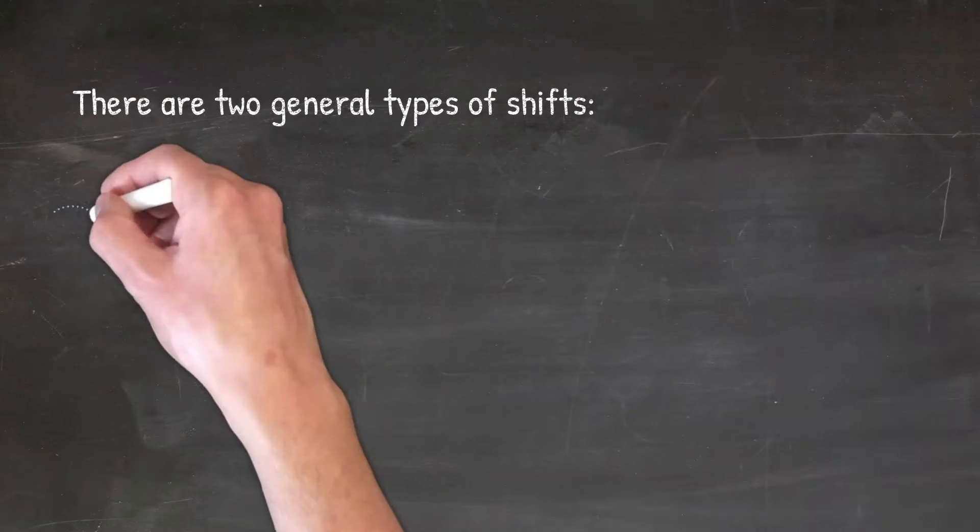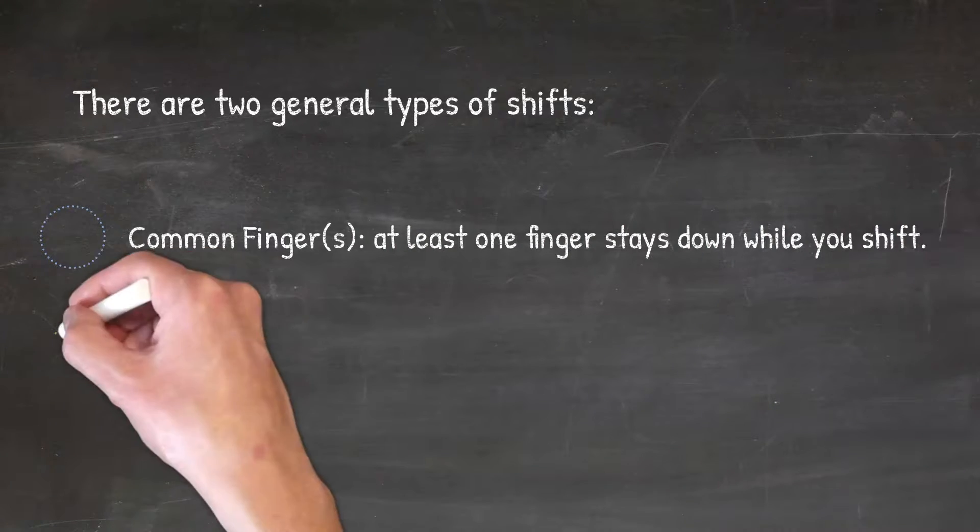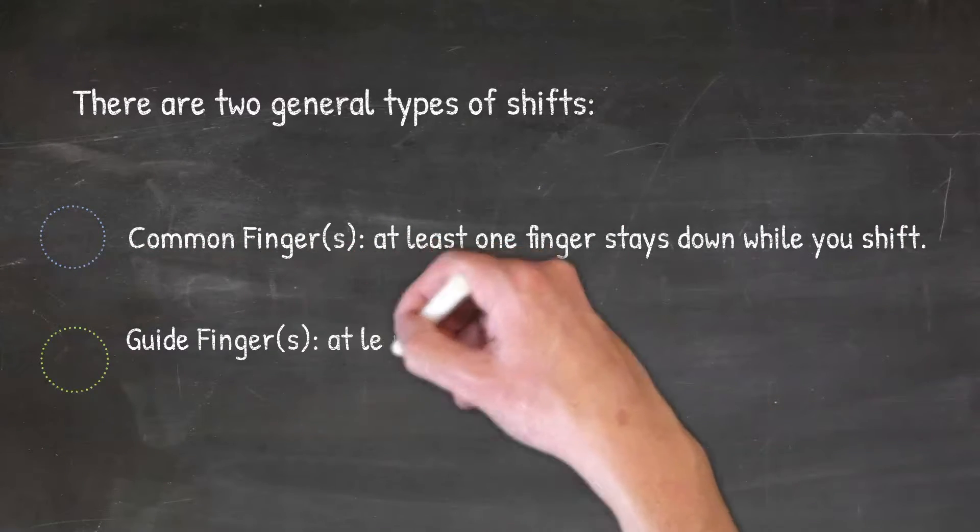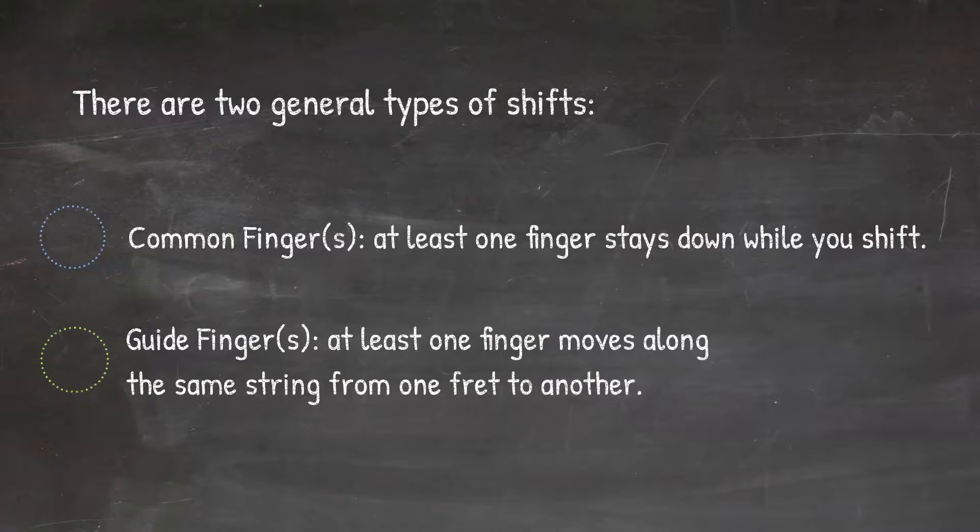There are two general types of shifts. One is a common finger, which means at least one finger stays down while you shift. The other is a guide finger, at least one finger moves along the same string from one fret to another.